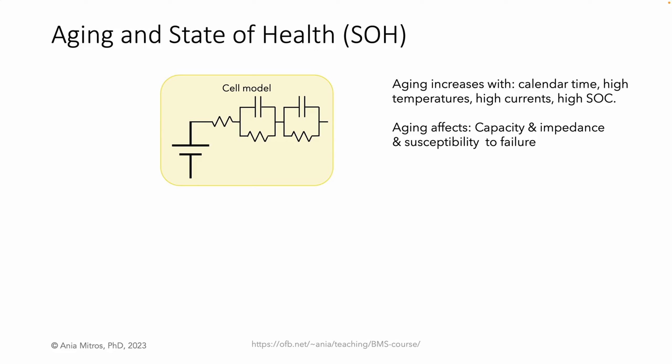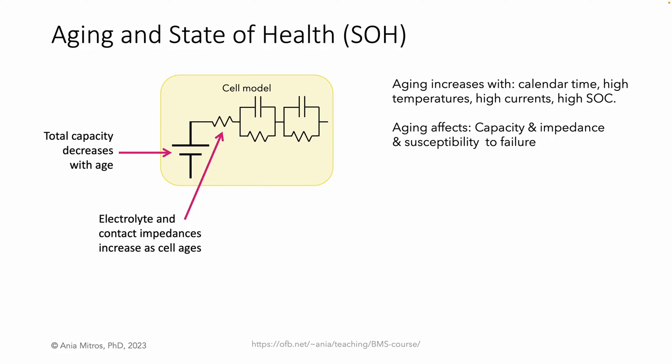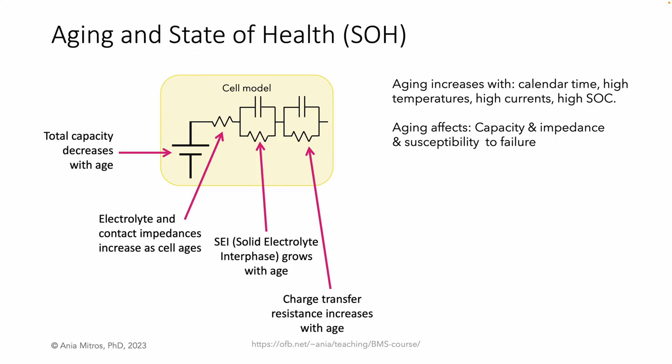Aging is reflected in the cell model as a decrease in total capacity, increased electrolyte and contact impedance, and increased resistances in the RC pairs due to increasing charge transfer resistance and SEI growth. SEI stands for solid electrolyte interphase — a thin film on the anode composed of various lithium compounds reduced from the electrolyte.